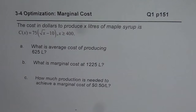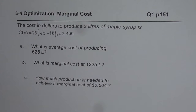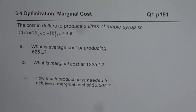The question: the cost in dollars to produce x liters of maple syrup is C(x) equals 75 times the square root of (x minus 10), where x is greater than or equal to 400. Part A: what is the average cost of producing 625 liters? Part B: what is the marginal cost at 1225 liters? Part C: how much production is needed to achieve a marginal cost of 50 cents per liter?